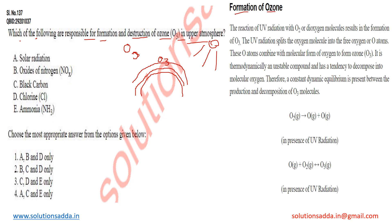Formation of ozone means the reaction of UV radiation with O2. O2 is the formula of oxygen or dioxygen molecules which results in the formation of O3, which is ozone.